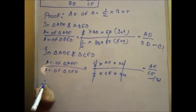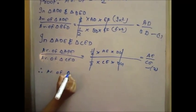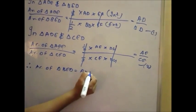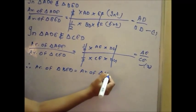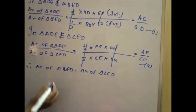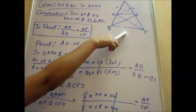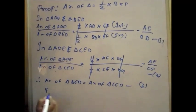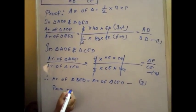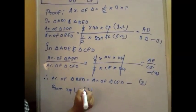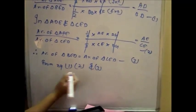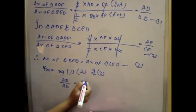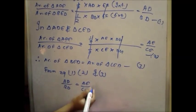Now, since area of triangle BED equals area of triangle CED, as they both lie between the same parallels and on the same base — this is our third equation. From equations 1, 2, and 3, we get AD upon BD equals AE upon CE. Hence proved.